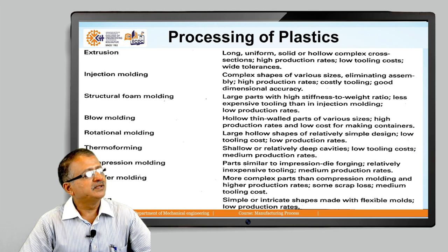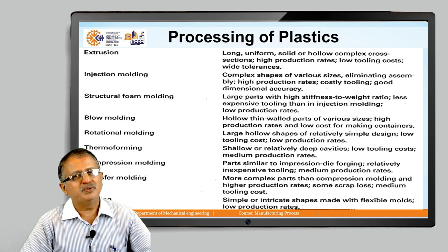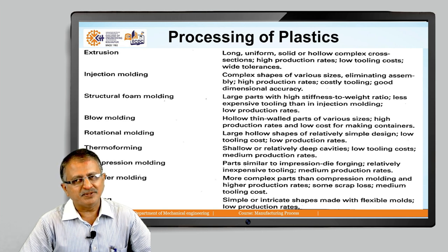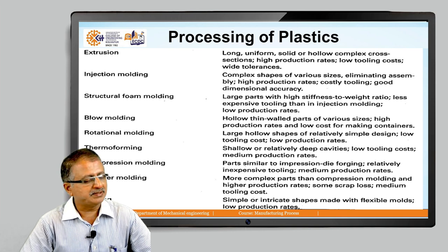Structural foam molding, blow molding for hollow thin-walled parts of various sizes offers high production rate and low cost. Like this, rotational molding, thermoforming, compression molding, transfer molding, and casting — these are the plastic processing methods. Each one has its unique features and mostly serves the ultimate objectives of cost, quality, and time. That is why for any type of requirement, plastic has its processing method, equipment, and is both economically and technologically viable.